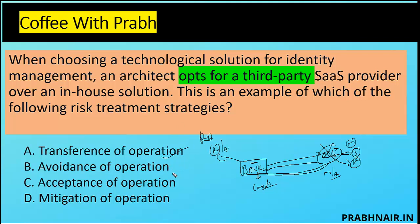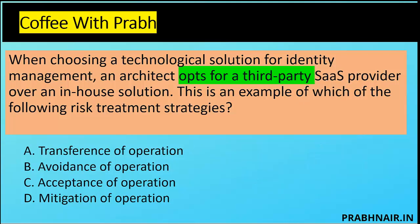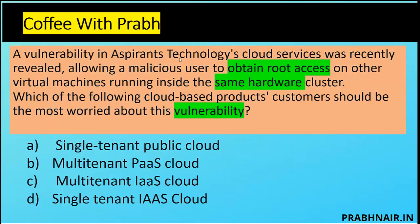We have four options: transfer of operation looks very close. Avoidance is not the answer — avoidance means avoiding the solution itself, but here they went with the solution. Acceptance is not the answer because they decided to implement a control. Mitigation is not about reducing impact via an in-house alternative. Going with a cloud solution is a perfect example of transfer of operation. Answer is option A.